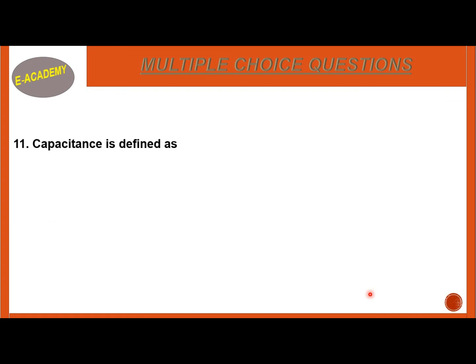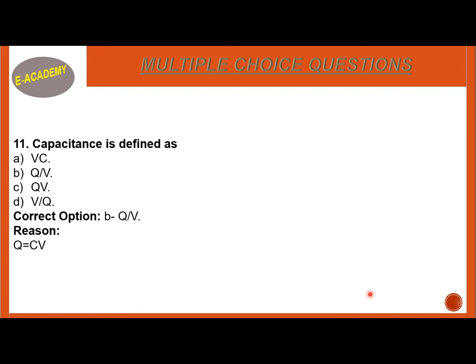MCQ Number 11: Capacitance is defined as — VC, Q/V, QV, or V/Q? The correct option is B, Q/V. The reason is from Q = CV, rearranging gives C = Q/V.